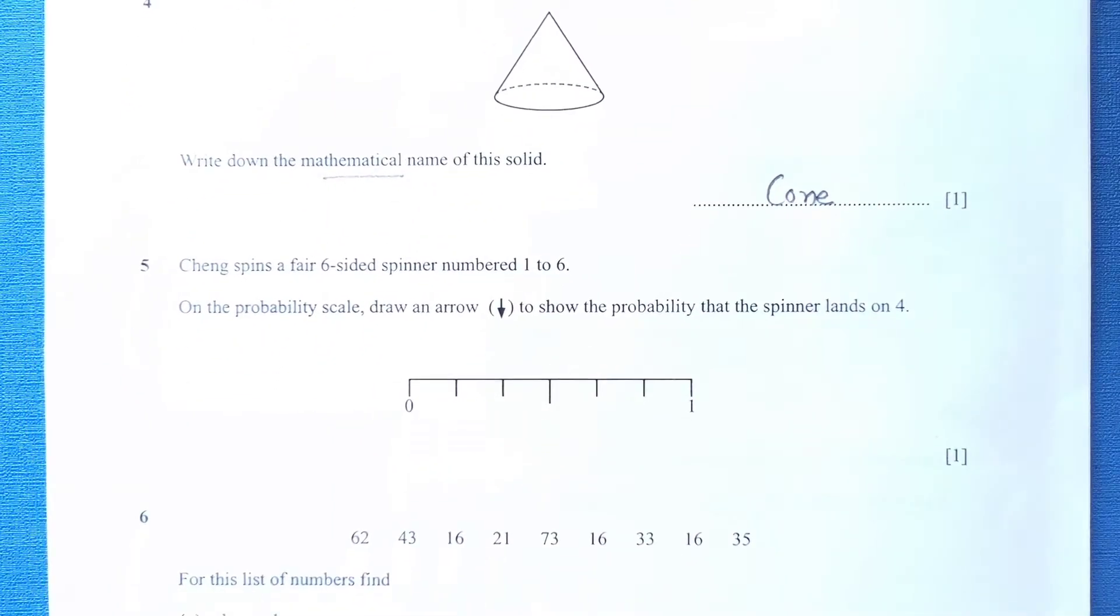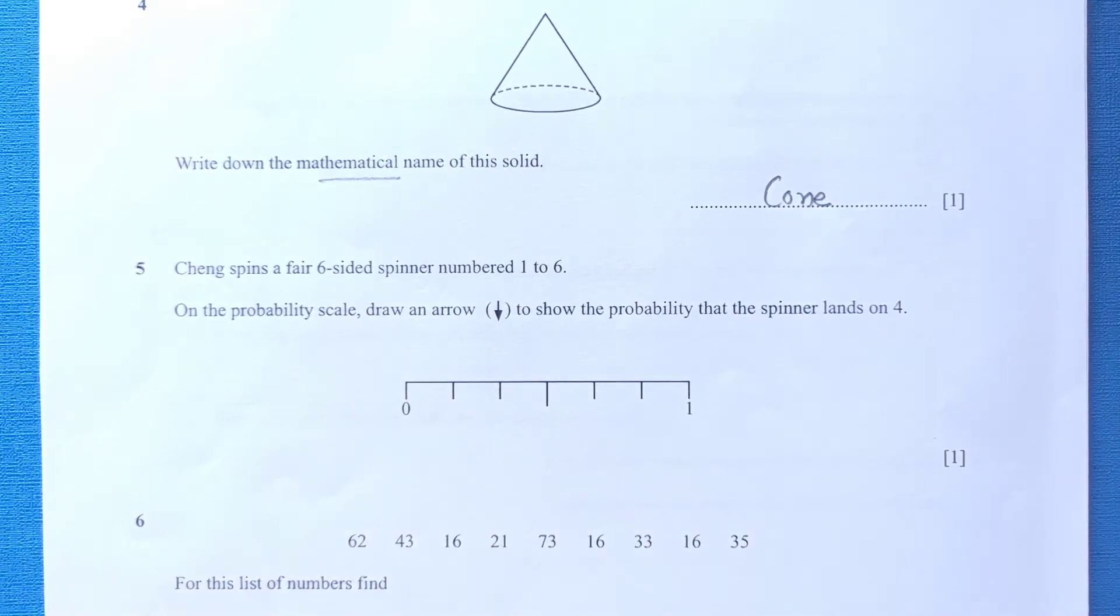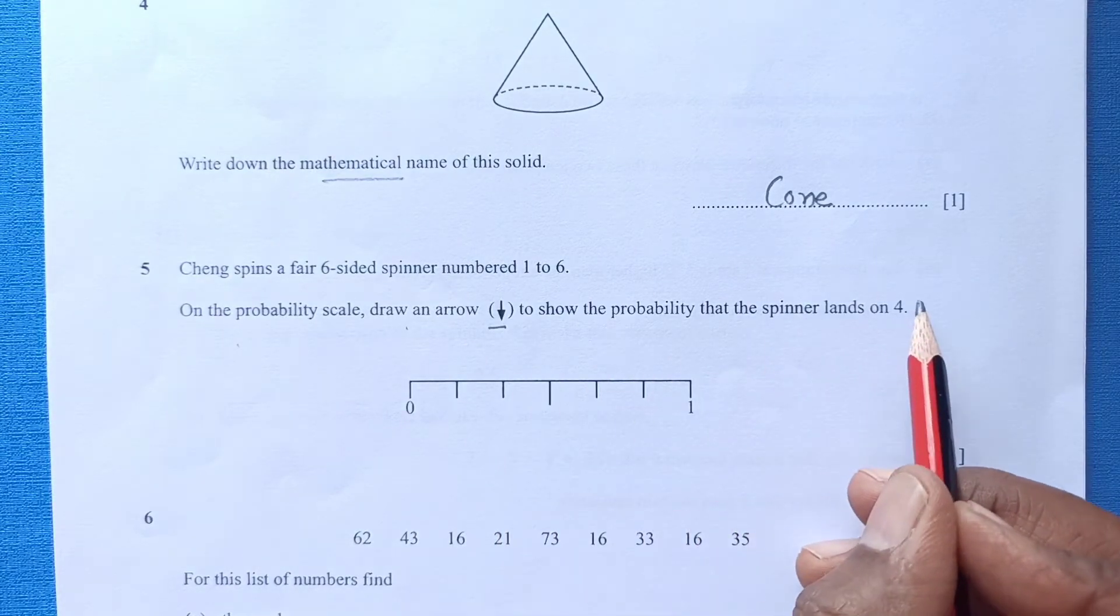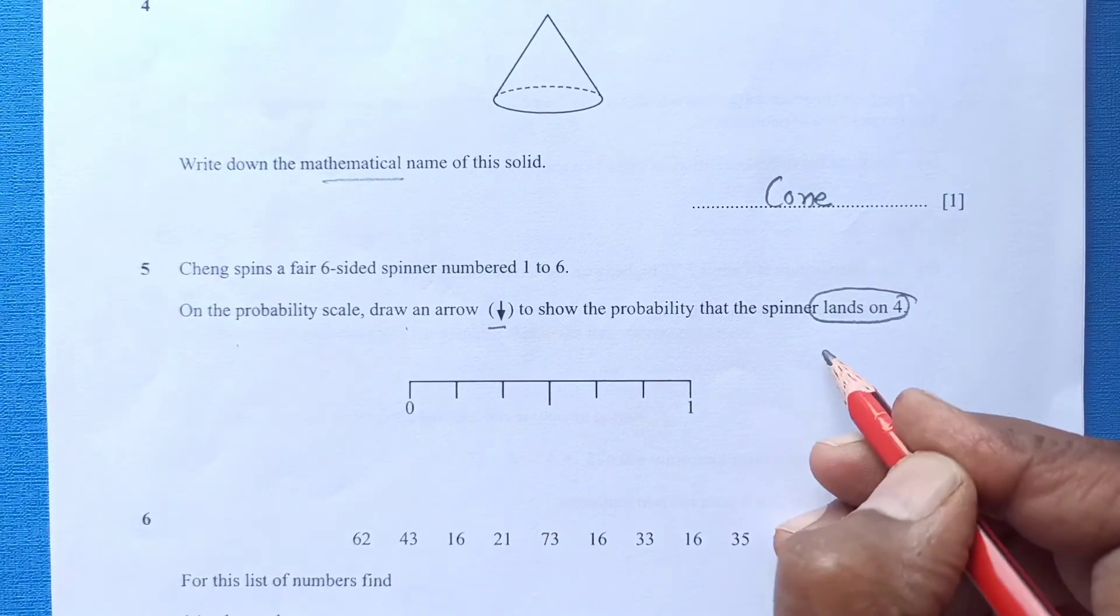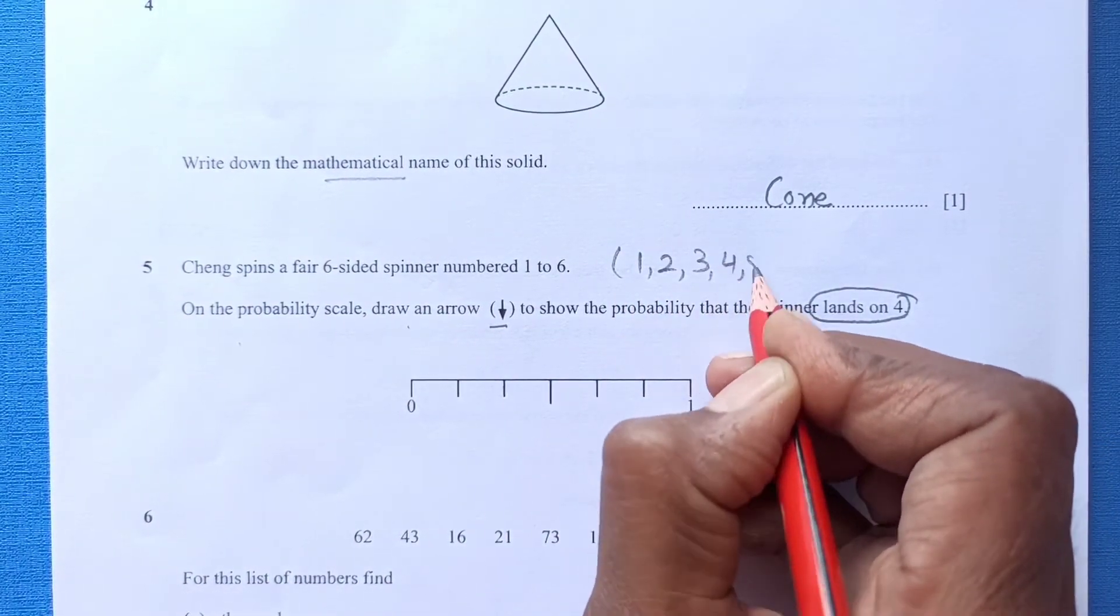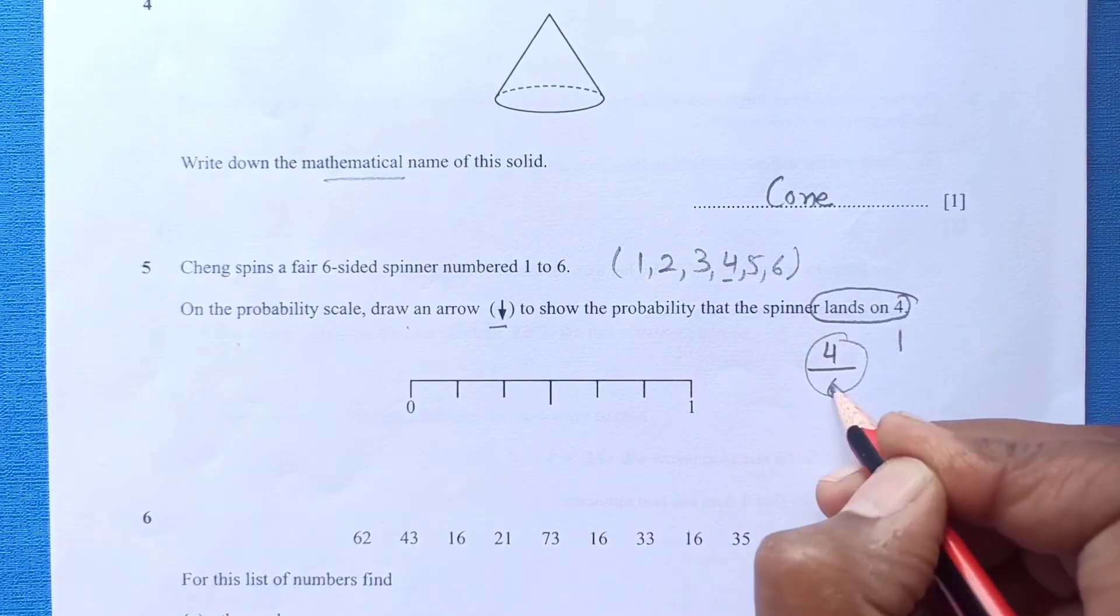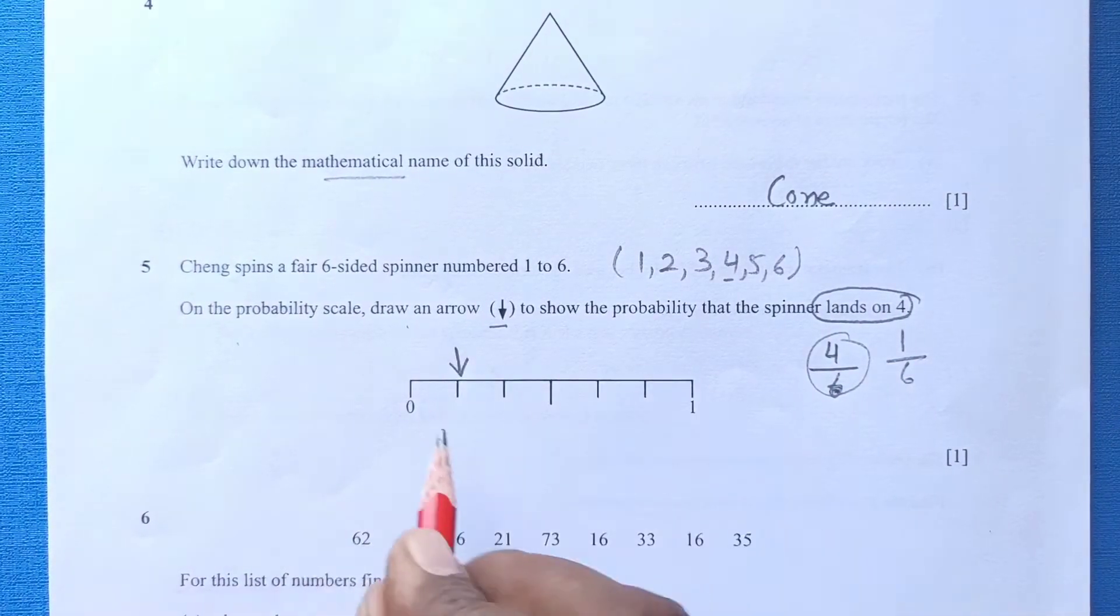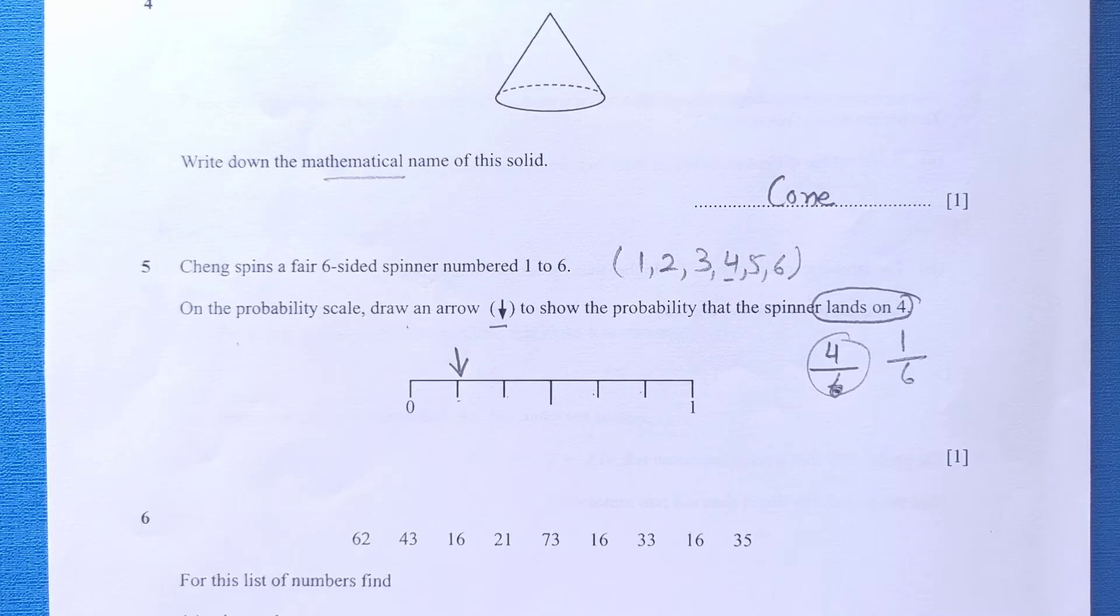Number 5: Chen spins a fair-sided spinner numbered 1 to 6. On the probability scale, draw an arrow to show the probability that spinner lands on 4. It will land on 4 only once, because 1 to 6, we have the probability. 4 will occur once only out of 6, so that means it's going to be 1 over 6. This is divided into 6 parts: 1, 2, 3, 4, 5 and 6. So first one will be the mark where we will put the arrow.